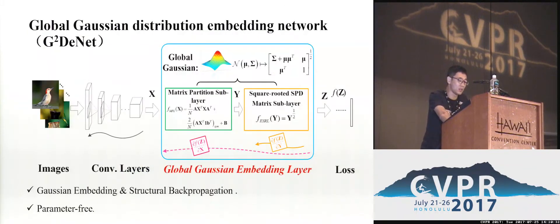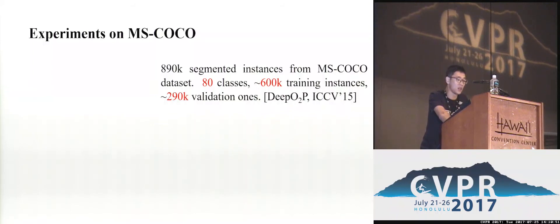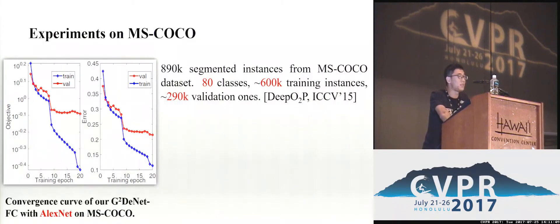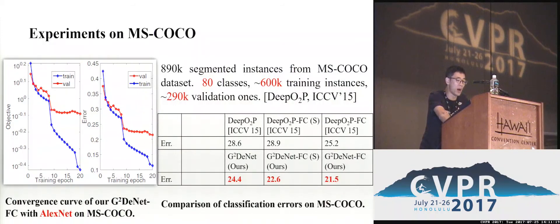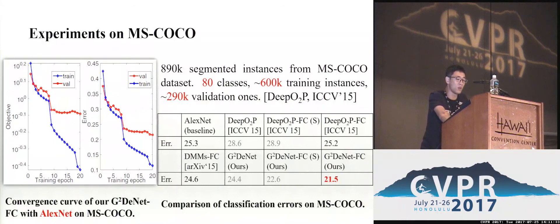As described above, we can implement our GDE unit with the introduced Gaussian embedding form and the proposed structured backpropagation method. Notably, our proposed Gaussian embedding layer is parameter-free. We first conduct experiments on a subset of the COCO benchmark, which includes about 600,000 training instances and 290,000 validation instances from 80 classes. This subset is collected by DPP. Using ResNet as the baseline CNN model and the same parameter settings as DPP, our GDE unit outperforms DPP at different configurations and also performs much better than Fisher vectors and baseline ResNet with the same setting.